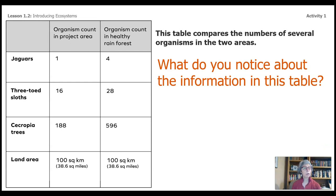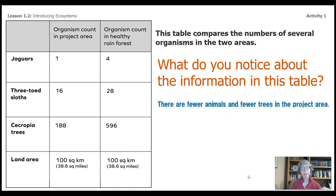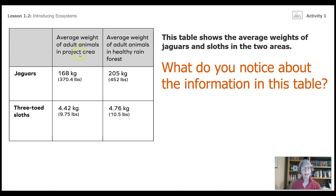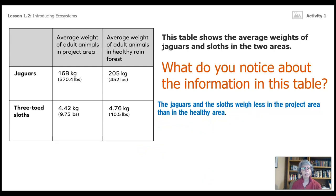This table compares the numbers of several organisms in two areas. I'm going to notice that we are studying the same size area in our project area and in the healthy rainforest — it's really important to keep that information the same. You can follow along on page 10. This column shows the organisms counted in the project area, and this column shows the number in the healthy rainforest. There are fewer animals and fewer trees in the project area. Another table shows the average weights of animals in both areas — the jaguars and sloths weigh less in the project area than in the healthy area.